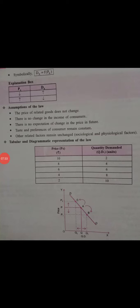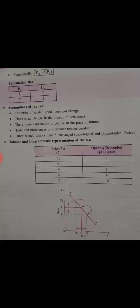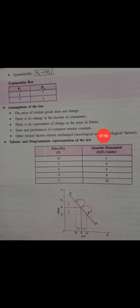Fifth assumption: other related factors remain unchanged — such as sociological and physiological factors. No such problem should arise that causes a change in quantity, quality, or price. So to summarize all assumptions: related goods' price should not change, consumer income should not change, expected future price should not change, taste and preference should remain the same, and all other related factors should remain unchanged. Only price and quantity demanded should be the variables.